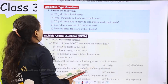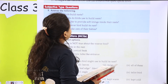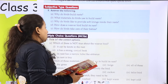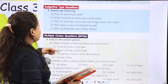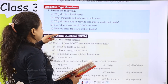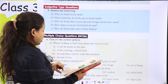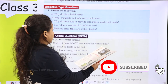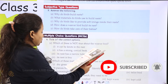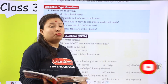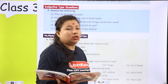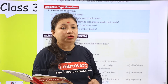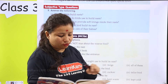Question number 3 is why do birds like to provide soft linings inside their nest? Birds apne nest ko soft border kyo dheti hai? Birds like to provide soft linings inside their nest to make it more comfortable. Jis se unke nest aur bhi jyadha comfortable aur soft ho jay hai.